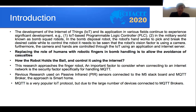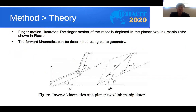In previous research, a passive infrared sensor was used, connected to the M5 Stack board and MQTT broker, as a smart home approach. MQTT is a very popular Internet of Things protocol, but due to a large number of devices connected to the MQTT broker, there is mathematics to illustrate — specifically the inverse kinematics of a planar two-link manipulator for the finger.